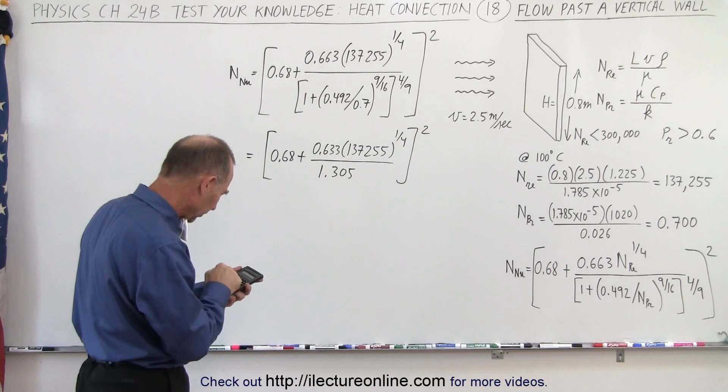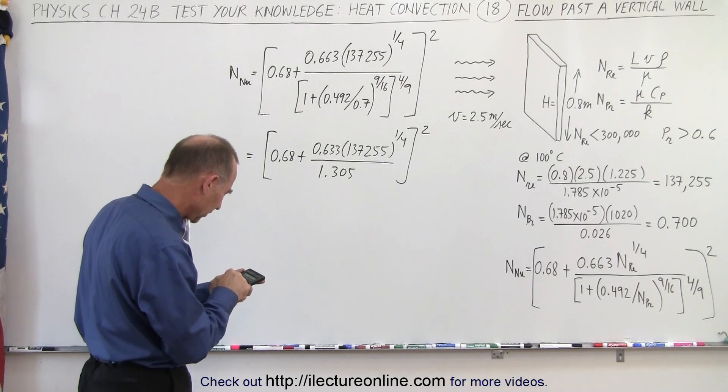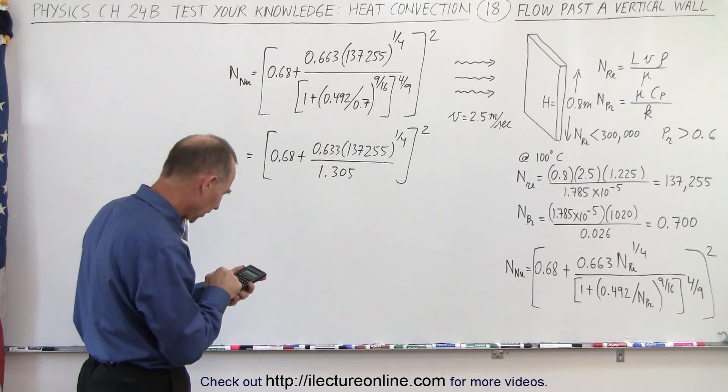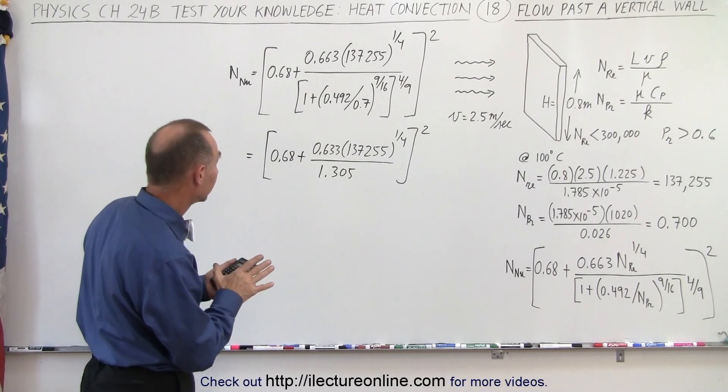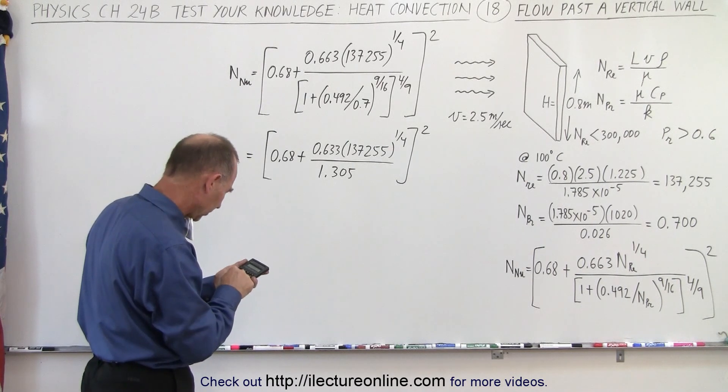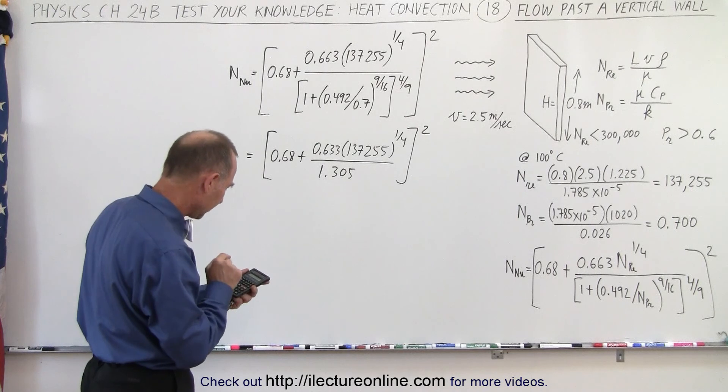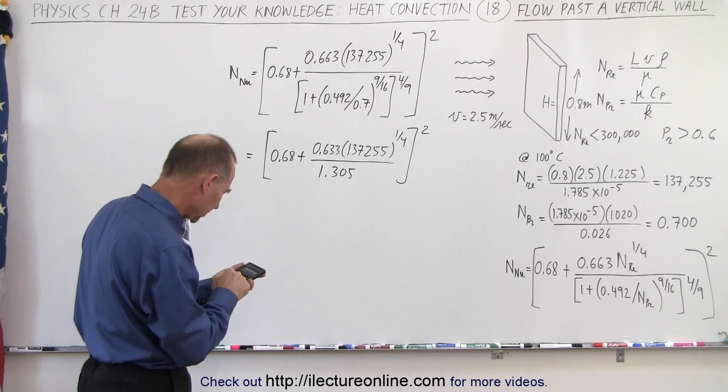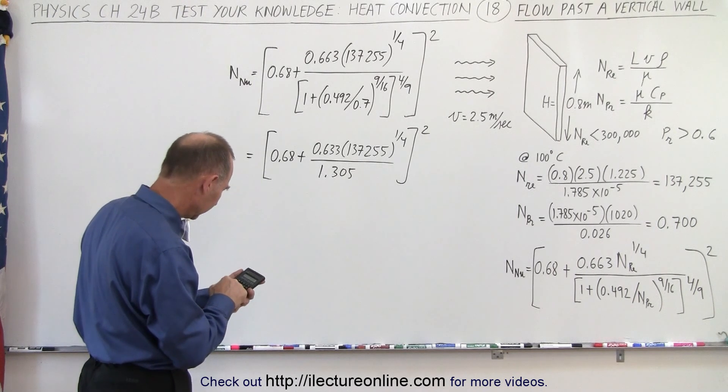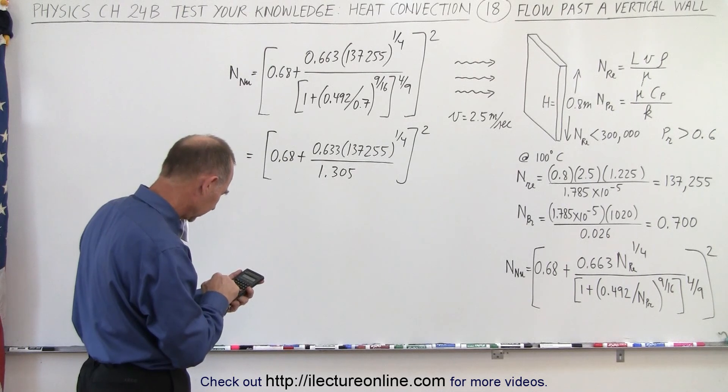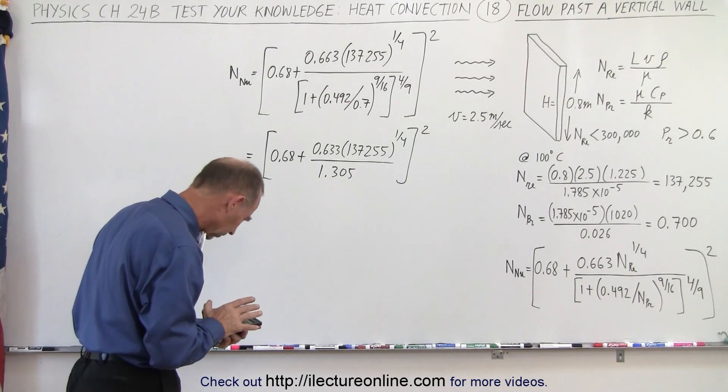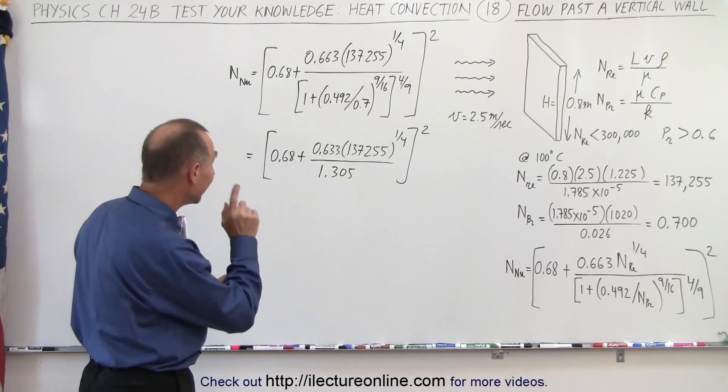Now we multiply times 137,255 raised to the 0.25 power, multiply times 0.633, add that to 0.68, which gives us about 10.